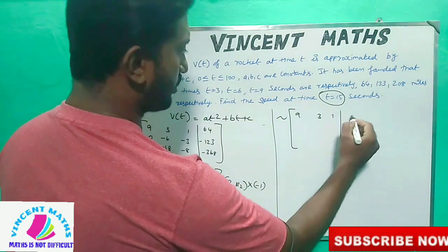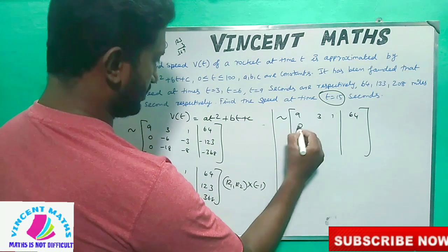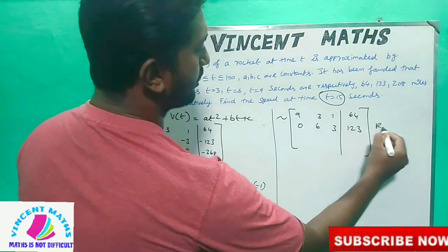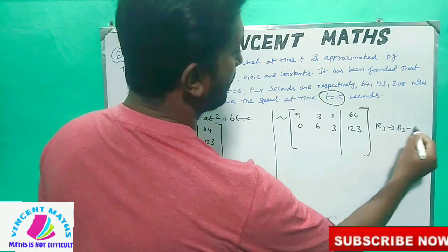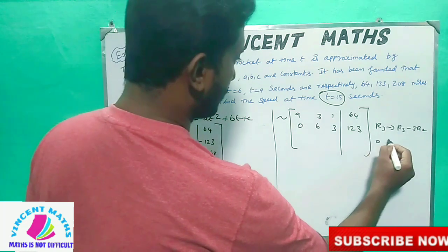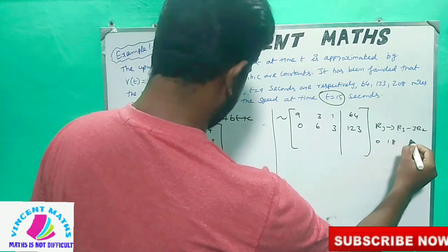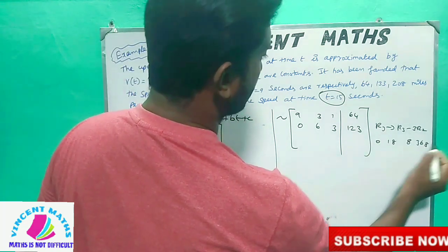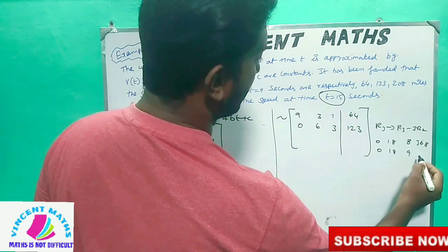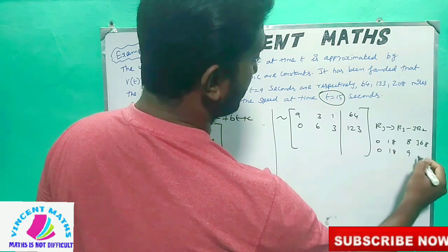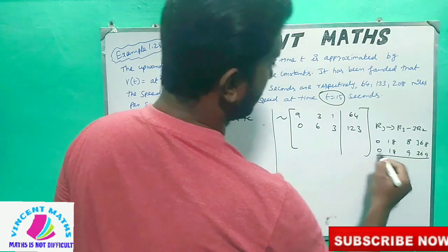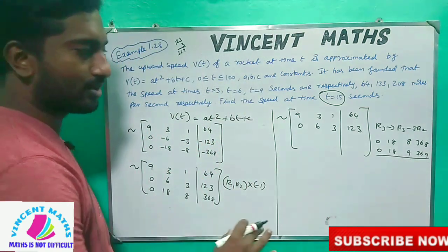Row 1 is [9, 3, 1 | 64], row 2 is [0, 6, 3 | 123]. For row 3, [0, 18, 8 | 368], we do R3 minus 3×R2. That gives 3 times row 2 as [0, 18, 9 | 369]. Then R3 minus 3×R2 gives [0, 0, -1 | -1].